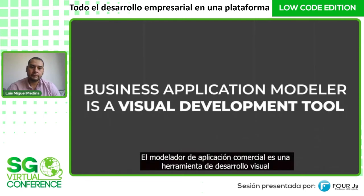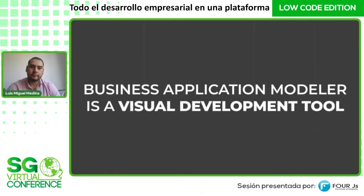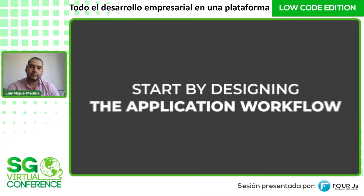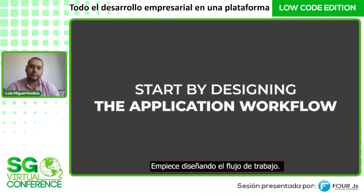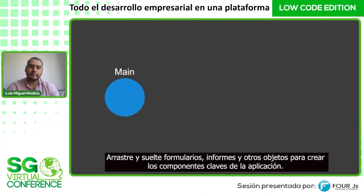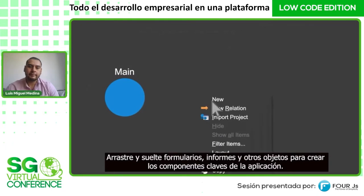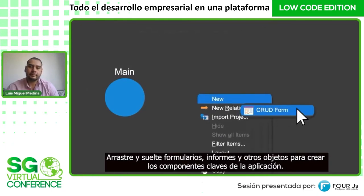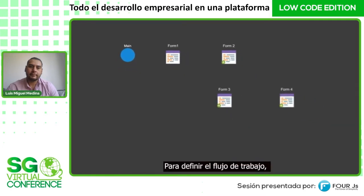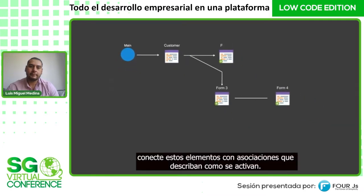Business Application Modeler is a visual development tool that all but eliminates the need to write code. Start by designing the application workflow. Drag and drop form, report, and other objects to create the application's key components. Then connect these elements with relations that describe how they get triggered.